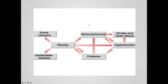Obesity is a known risk factor for some cancers and for gallbladder disease. It's also a risk factor for diabetes, which is sort of a feedback loop — you become obese, which puts you at risk for diabetes, and diabetes disrupts your metabolic system causing you to gain more weight. Atherosclerosis is the buildup of plaque on the artery walls and can lead to high blood pressure, stroke, and heart attack, caused by both obesity and diabetes. Hypertension can create a feedback loop with atherosclerosis too, where high blood pressure creates more plaque, increasing your risk for stroke and heart attack.